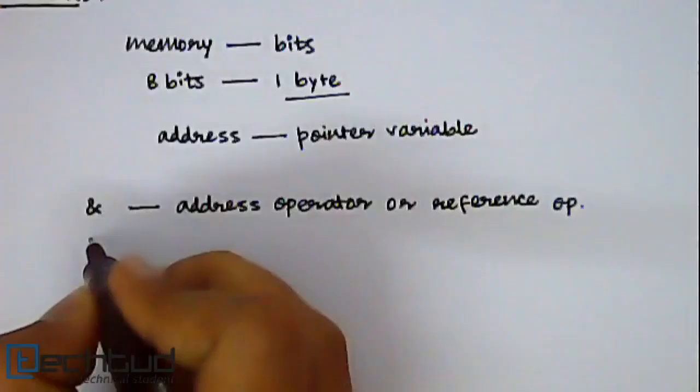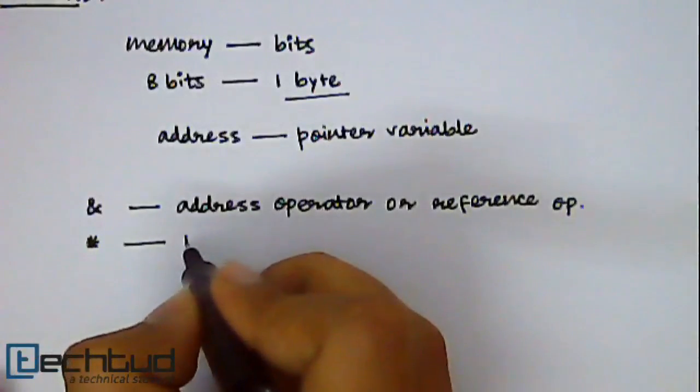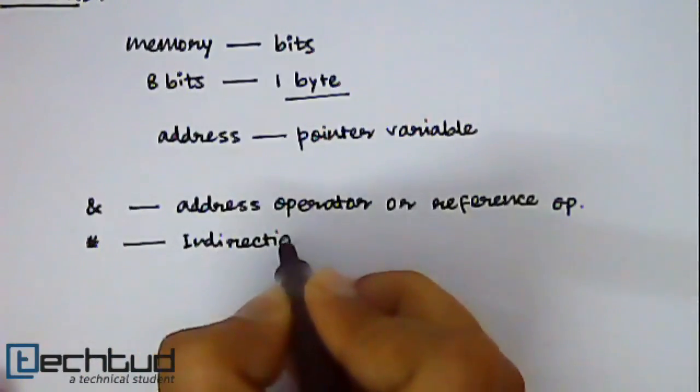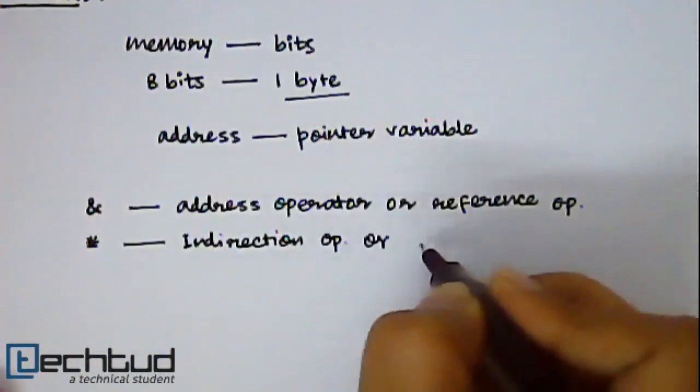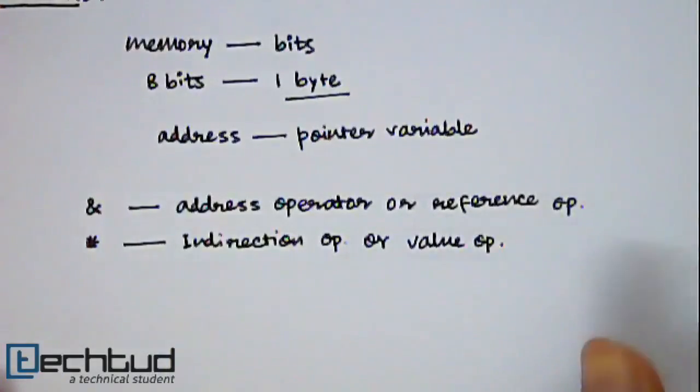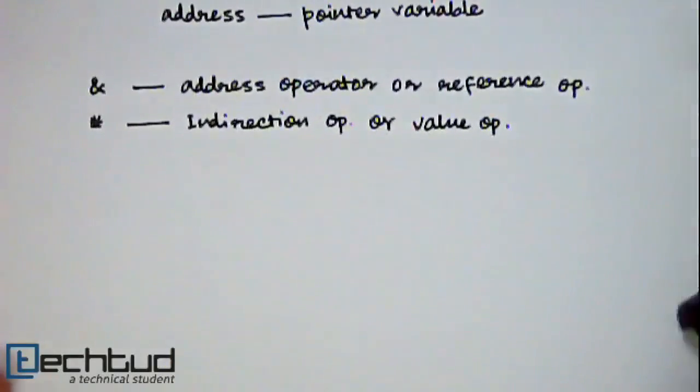The another one is star which is indirection operator or value operator. So let's understand their functionality using a small example.